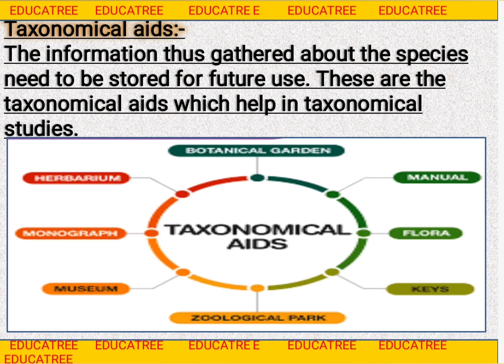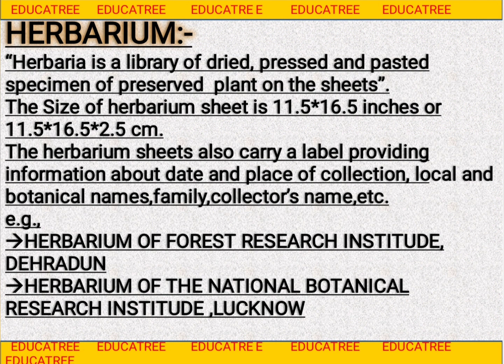There are so many aids we can use to preserve organisms, like botanical gardens, monographs, manuals, flora, keys, zoological parks, museum, herbarium, etc. We will discuss all these aids one by one. First one is herbarium — herbarium is a very important topic from an examination point of view.